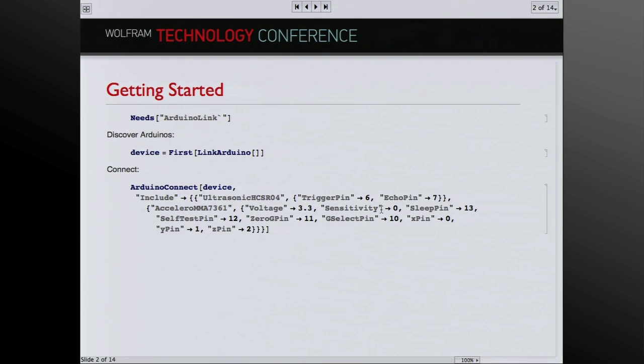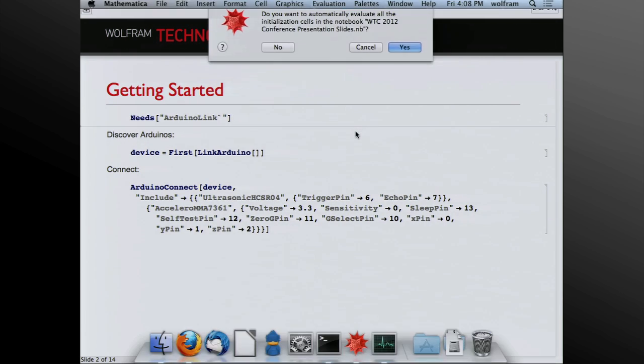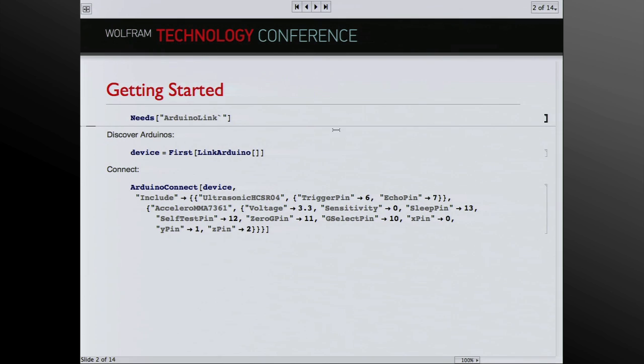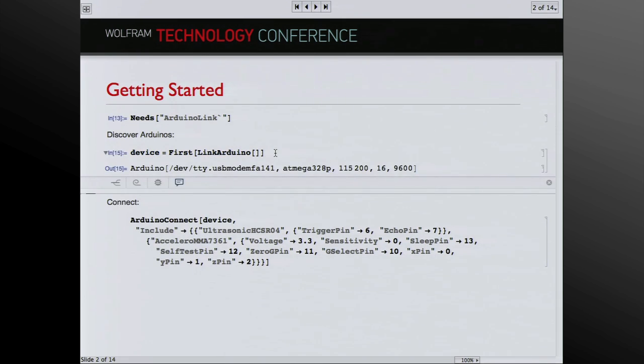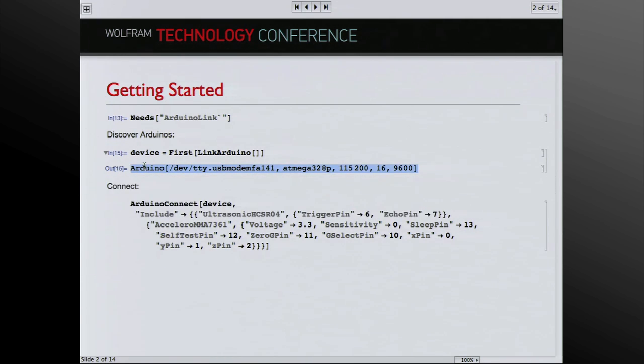Okay, so I'm just going to go right into the demo. So this is the code. I just need to run needs Arduino link. So it's just going to then link Arduino. So that's it returning. It sees this Arduino object. So now we're going to run Arduino connect with various libraries installed, which Keshav will get to later. Okay, so now we should be connected.